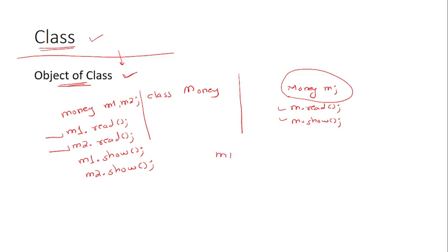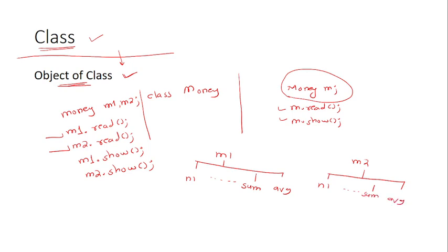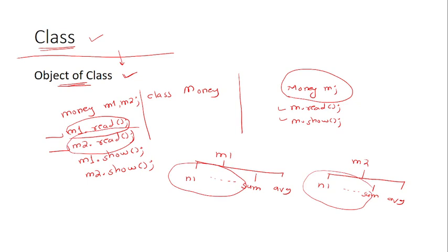When the program is executed, the compiler creates object m1 with all its member variables, and creates object m2 with all its member variables. When it executes m1.read, it works with the member variables of m1; when it executes m2.read, it works with the values of m2. The same member functions can be used with different objects.